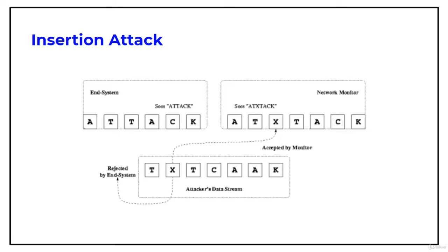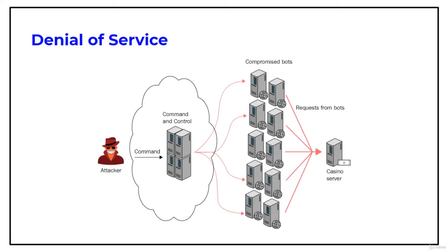The next attack is a DoS attack — denial of service — on the intrusion detection system. Many IDS use a centralized server for logging alerts. If an attacker knows the IP address of the centralized server, they can perform a DoS or other attacks to slow down or crash the server, so the attacker's intrusion attempts will not be logged.